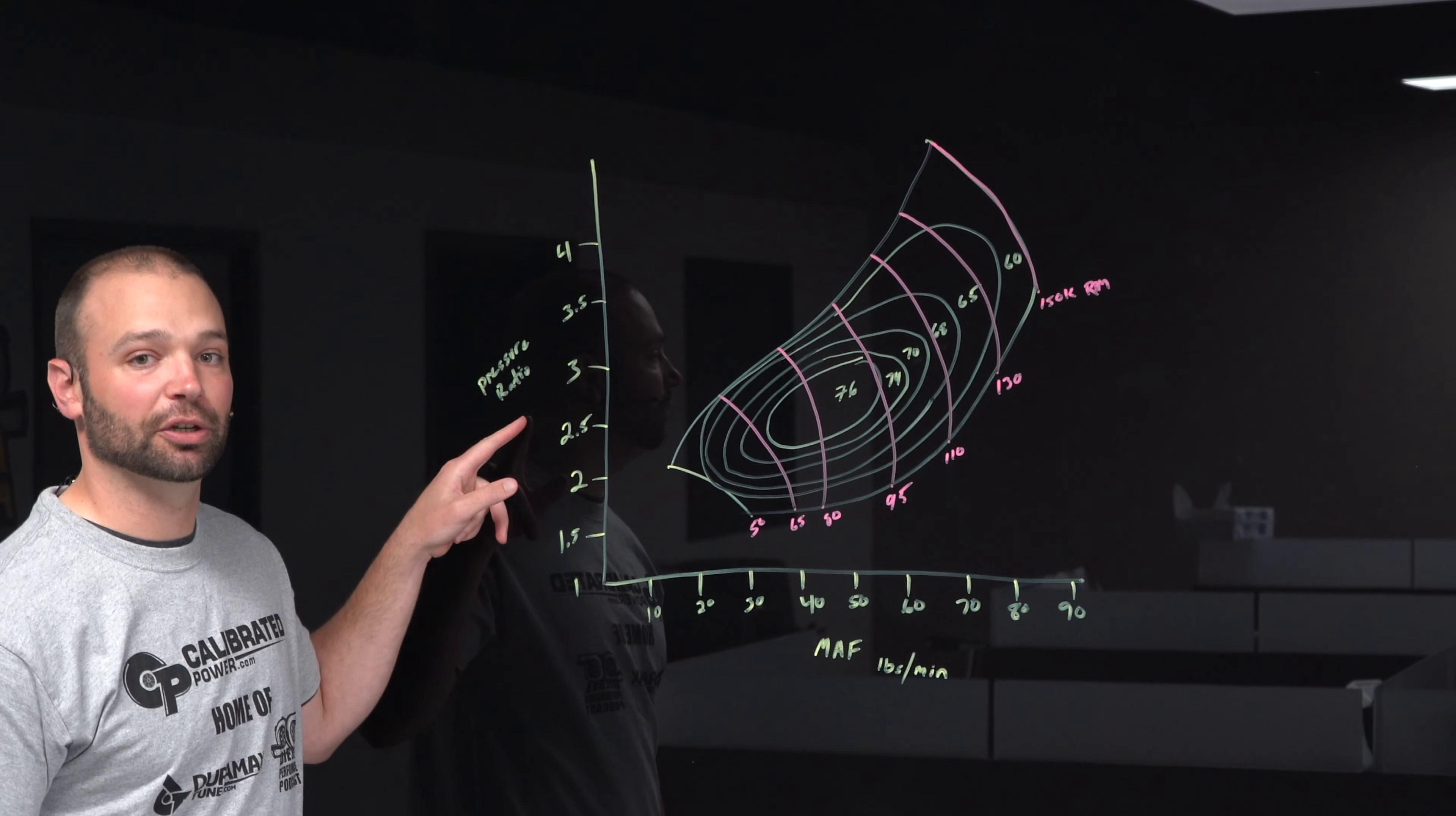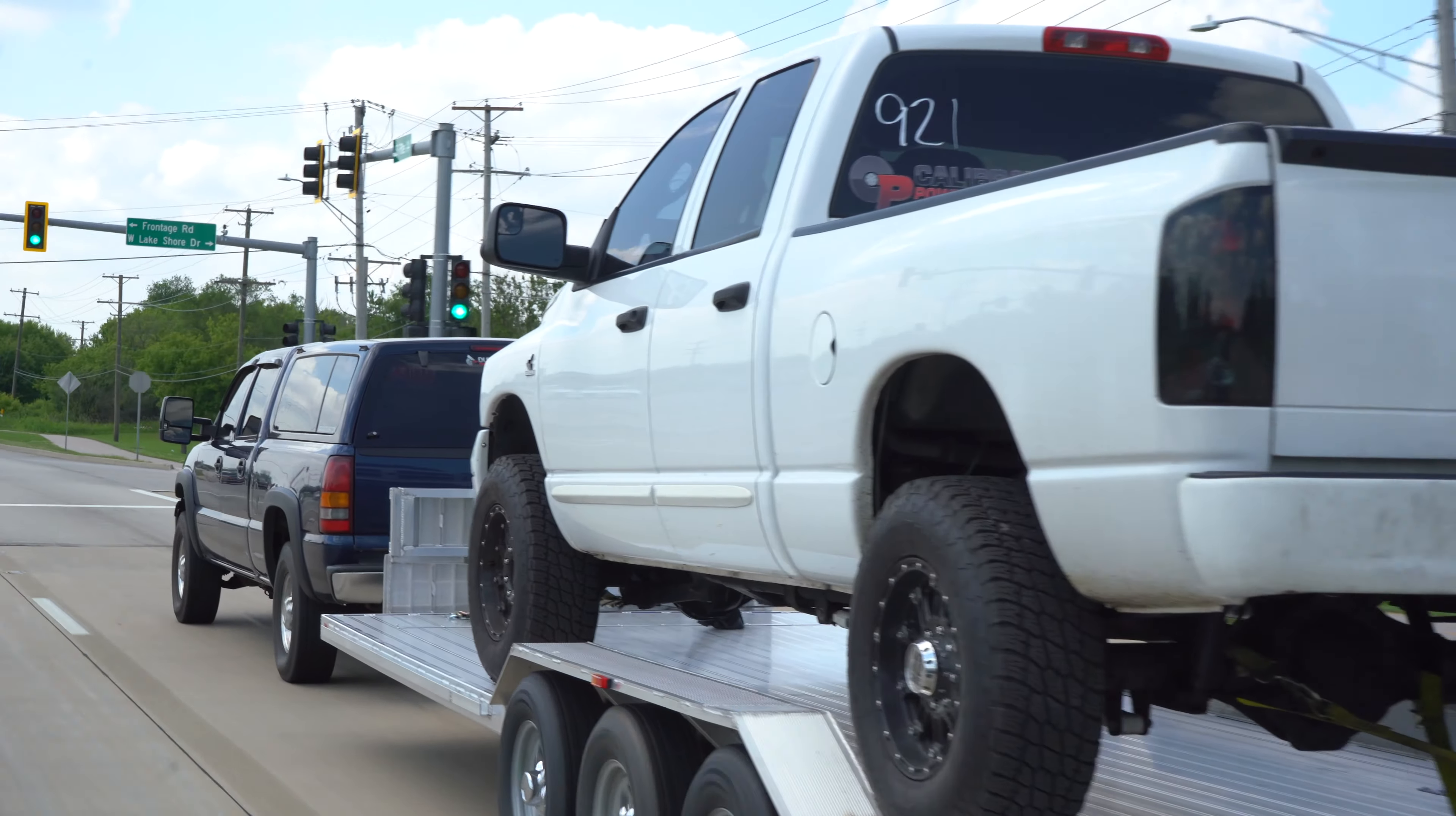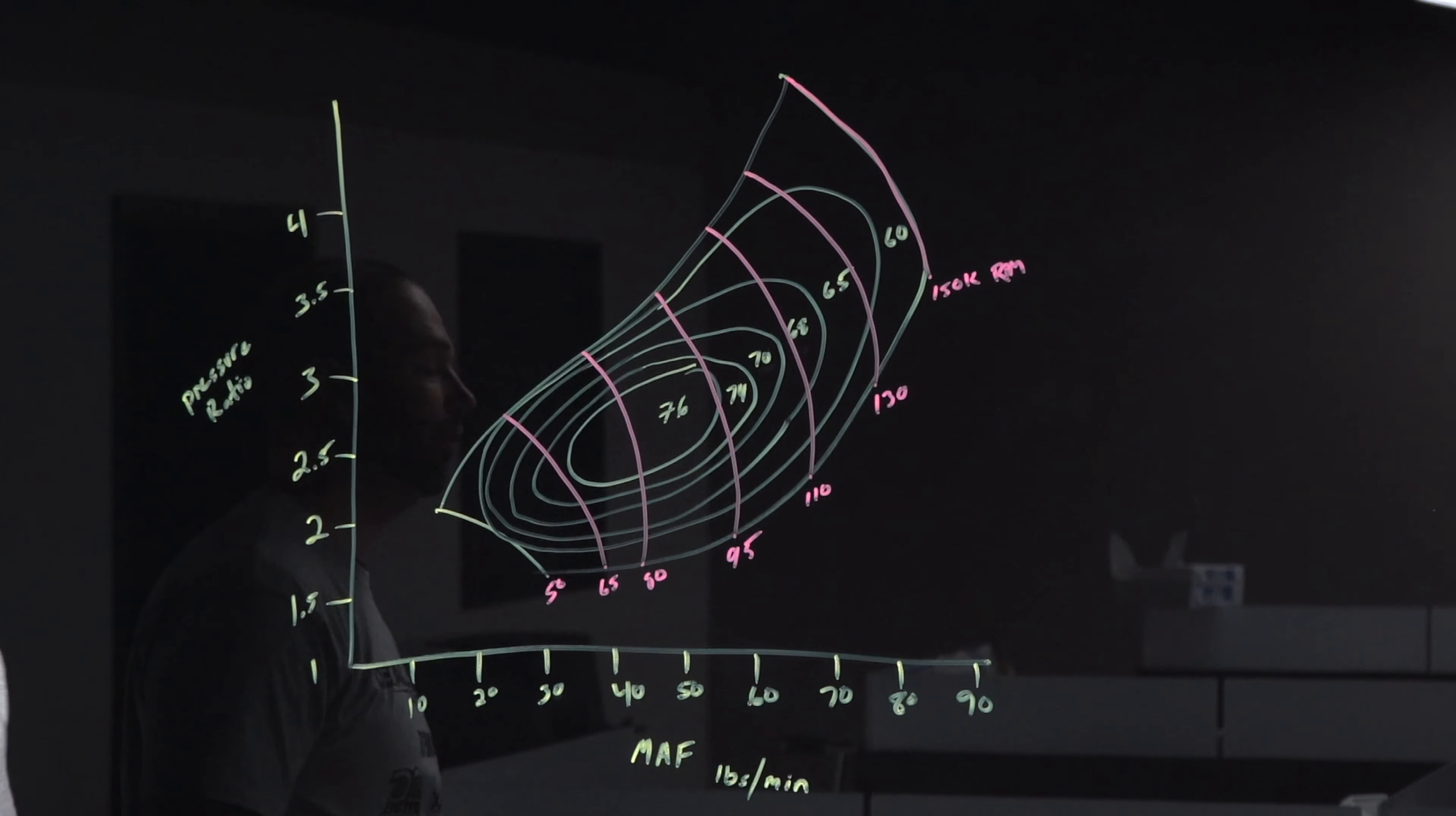Left hand side, pressure ratio. You can loosely correlate this to boost. So as pressure ratio goes up, boost goes up. The more you compress air, things change dynamically. The more air you move, things change dynamically. This graph right here is the graph of those efficiencies. And on that graph are also some shaft speeds that are worth noting.